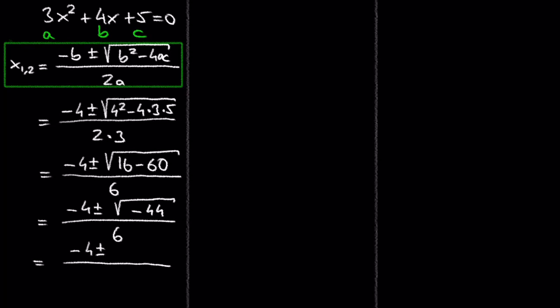Now it's getting interesting. If we only knew the real number system, this quadratic equation would have no solution and we would be done here. But since our last couple of videos, we know about complex numbers, and we also know that we can write the square root of negative 44 as i times the square root of 44.